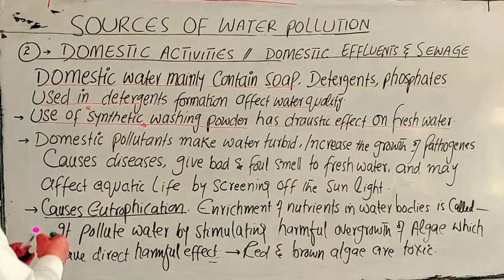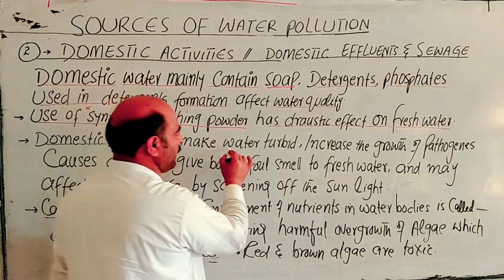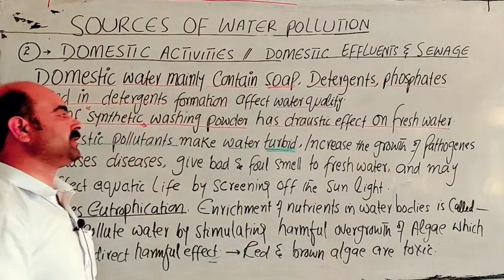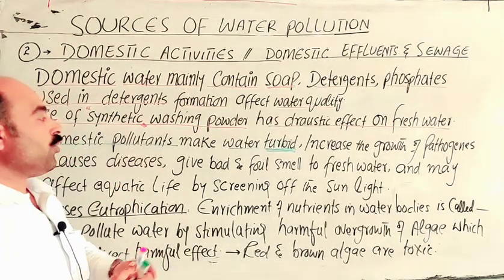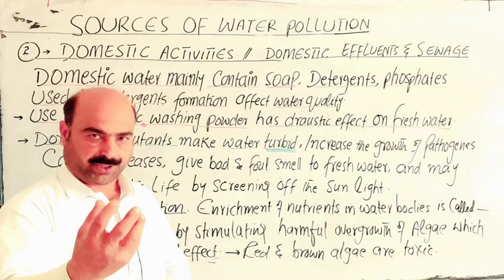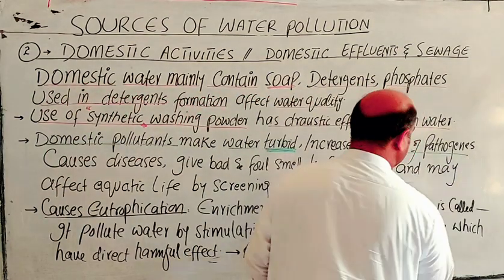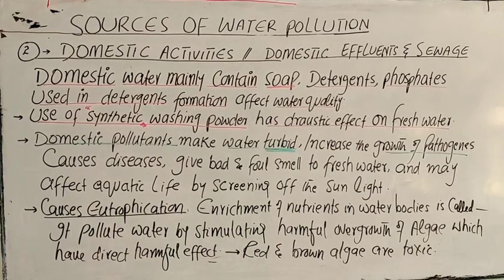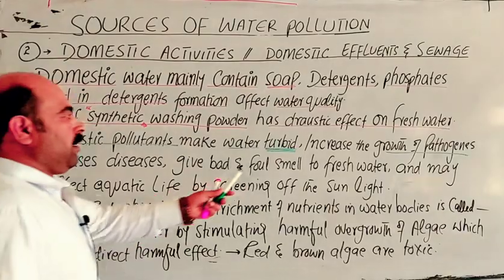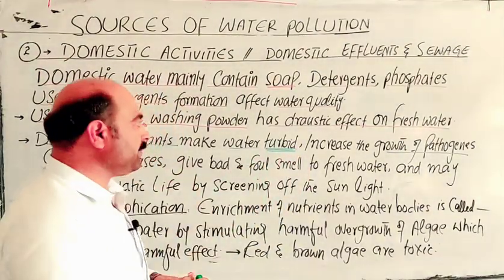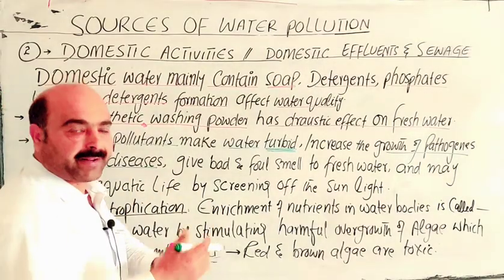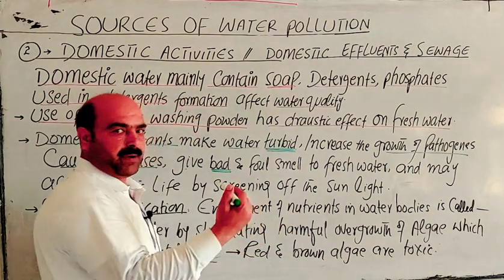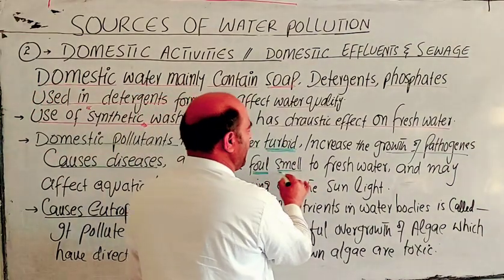The effects of domestic pollutants make water turbid. Domestic pollutants increase the growth of pathogens, cause various diseases, and give bad and poor smell to fresh water.